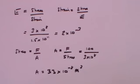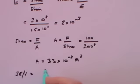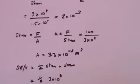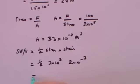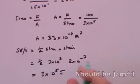And the third part: what is the strain energy per unit volume? The strain energy per unit volume equals half the stress times the strain: a half times 3 times 10 to the 8 times 2 times 10 to the minus 3, which equals 3 times 10 to the 5 joules per metre cubed.